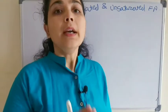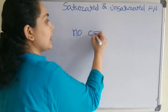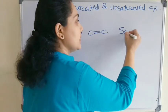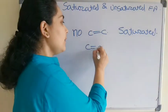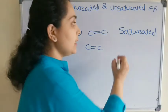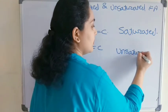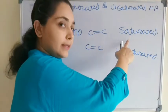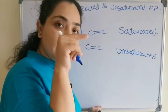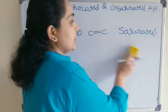What is the meaning of saturated and unsaturated? Saturated means if in the fatty acid no carbon-carbon double bond is present, then it is known as a saturated fatty acid. If a carbon-carbon double bond is present in the fatty acid, then it is known as an unsaturated fatty acid.